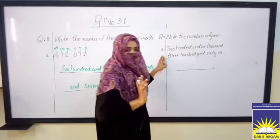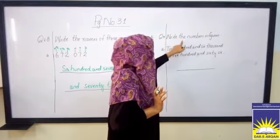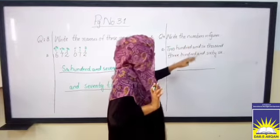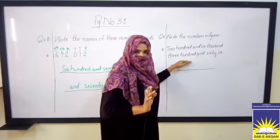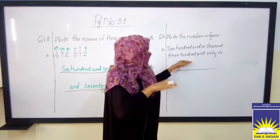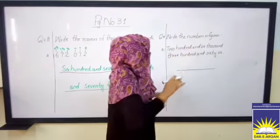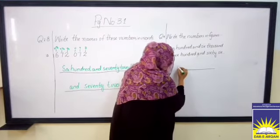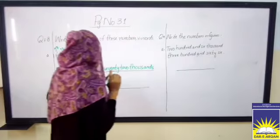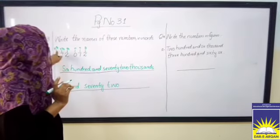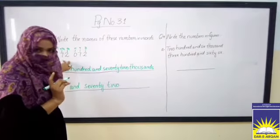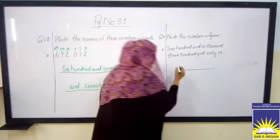In question number 9, what is this question set? Write the numbers in figures. Now you have the words, so you can write the figures. You'll start with two hundred and six thousand. Two hundred. You know that 100,000 is a six digit number.